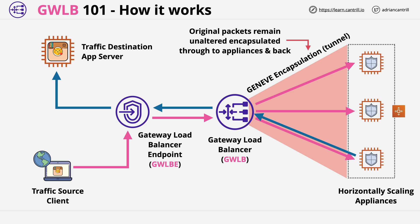The benefits of this architecture are that gateway load balancers load balance across security appliances, so you can horizontally scale. The gateway load balancer manages flow stickiness — one flow of data will always use one appliance — which allows that appliance to monitor the state of flows through a system. It provides abstraction, meaning you can use multiple security appliances for resilience: if one fails, packets are moved to another available appliance, much like other load balancers within AWS.